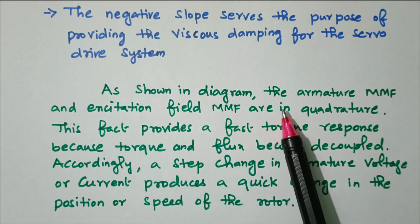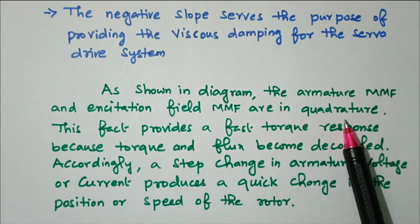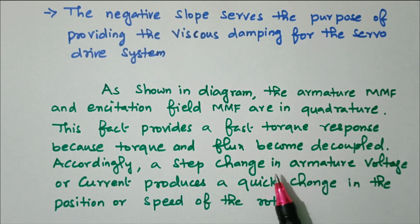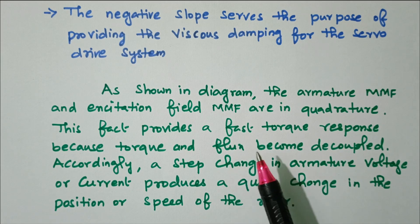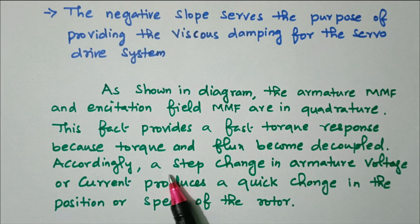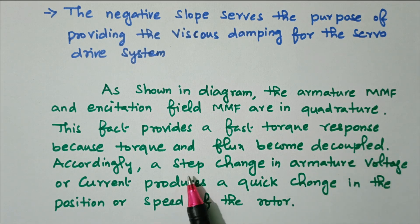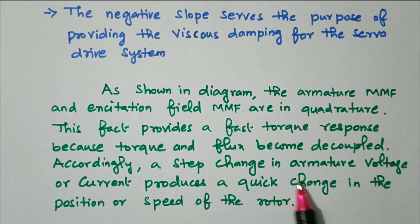As shown in the diagram, the armature MMF and excitation field MMF are in quadrature — 90 degrees. This fact provides a fast torque response because torque and flux become decoupled. Any small changes are reflected immediately. A step change in armature voltage or current produces a quick change in the position or speed of the rotor with no delay, which is why this motor is used for position control.